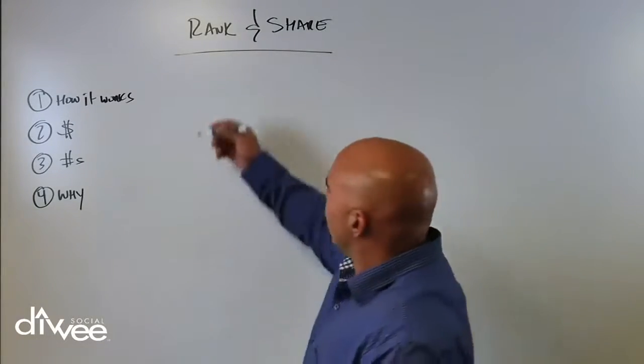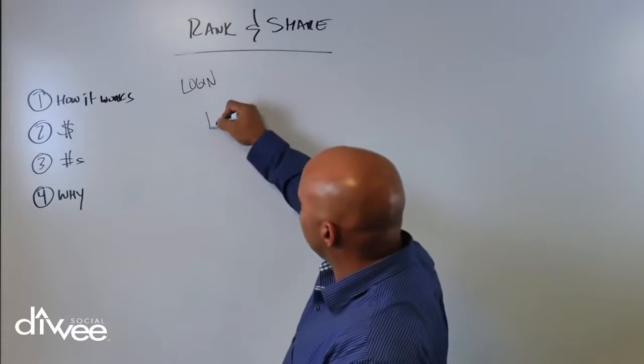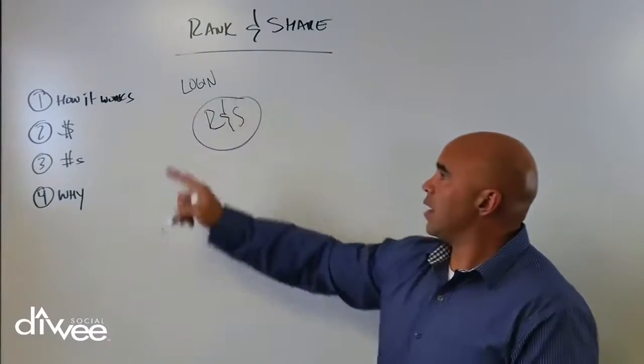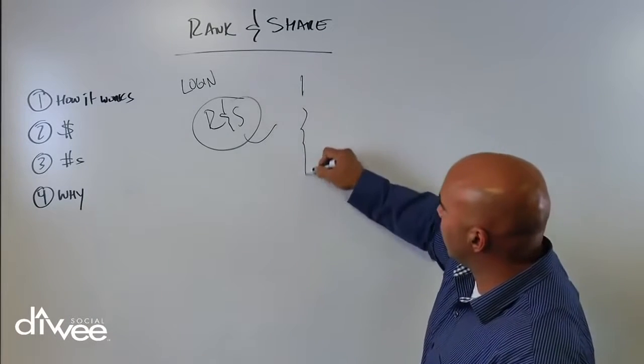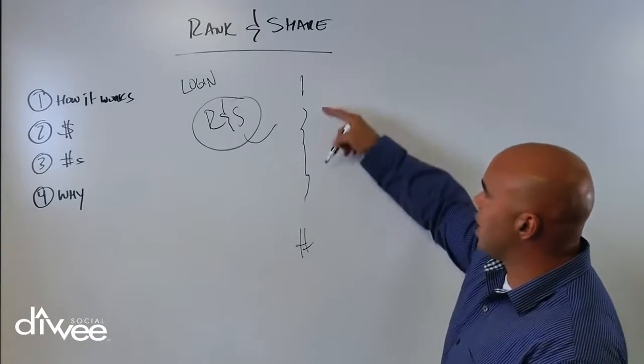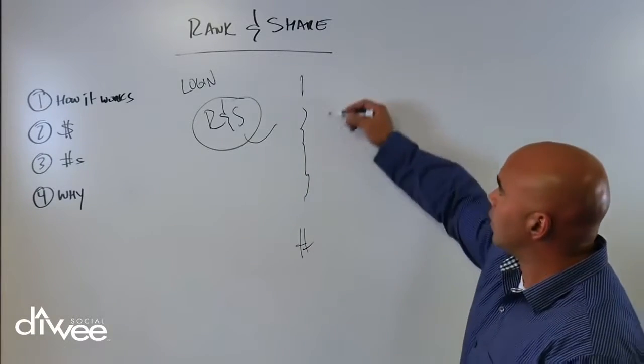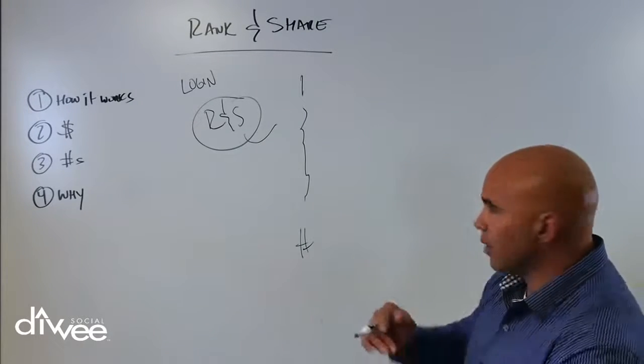How it works is real simple. You log in to your back office. There's a rank and share button. Log in, click on the rank and share button, and it'll give you all your apps for the day. It'll give you your one to five, your five to ten, your ten to twenty, whatever. So you're going to get an app, you open your page up, you're all happy, you check it out.